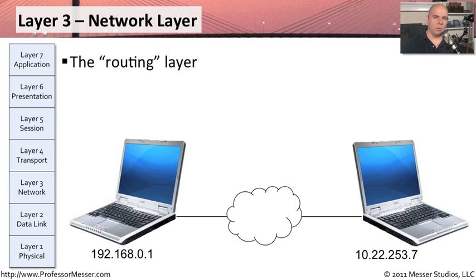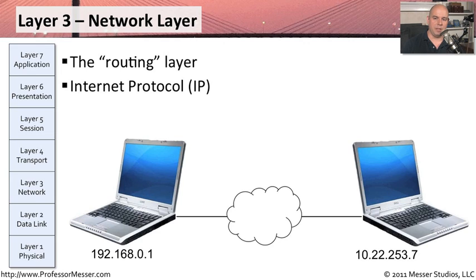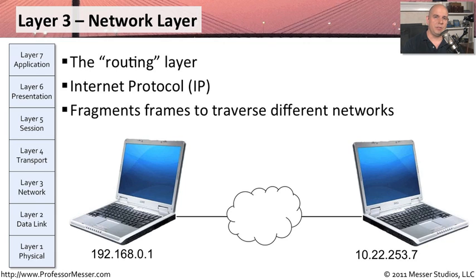Layer 3 of the OSI model is the network layer, and this is where IP addresses live — it's also where we do routing. A router looks at IP addresses, which are Layer 3 addresses. Two workstations communicate using IP addresses, and a router in the middle determines where information is going based on the destination IP address. It has a list of all routes and sends traffic out the correct connection. The router doesn't care about MAC addresses — all it knows is the Layer 3 IP address. If frame sizes are too big to traverse certain networks, this layer is also responsible for fragmenting that information into smaller pieces.